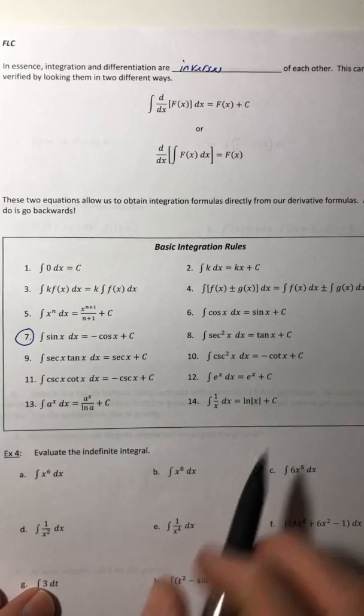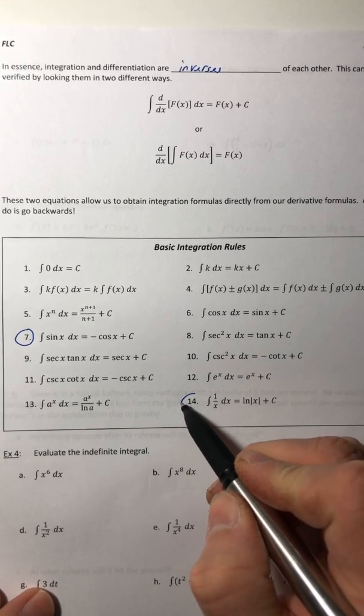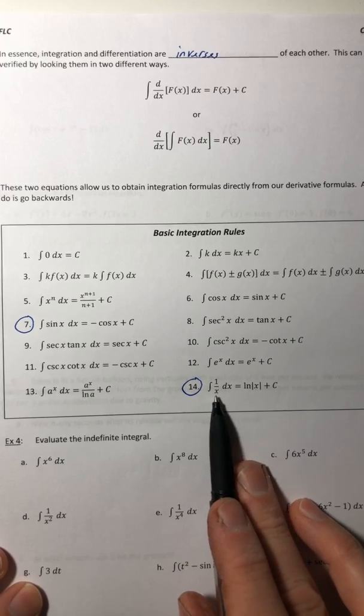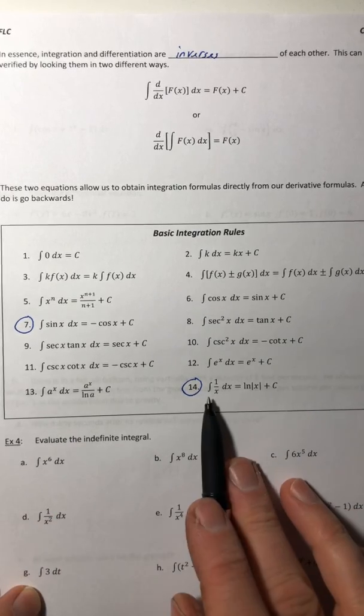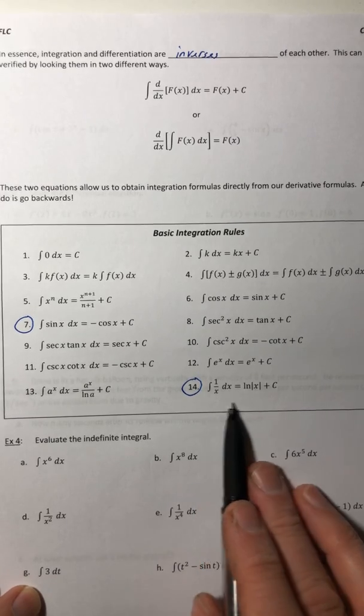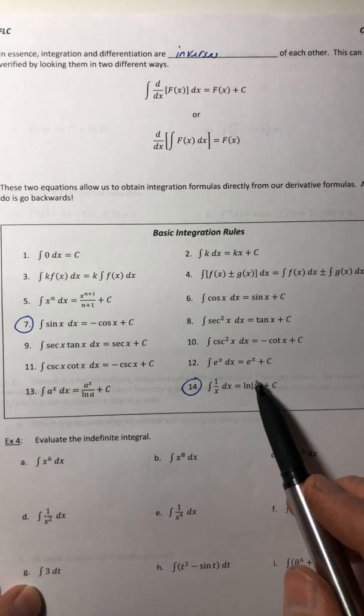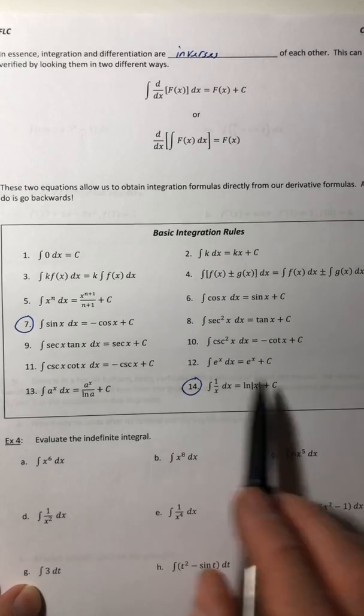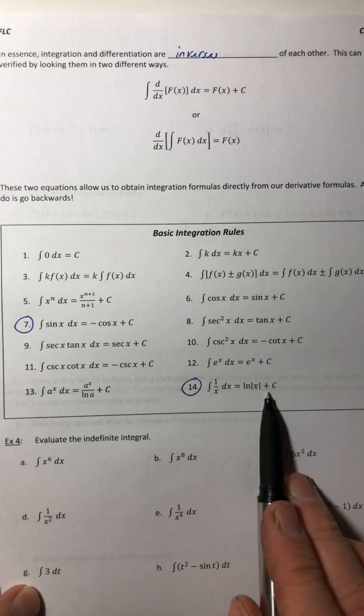And then the other one that seems to trip people up is number 14. This little guy right here. And the thing that messes that up is they want to do a derivative of this instead of integrating it into ln of the absolute value of x. And the other thing that trips them up is they want to leave off the absolute value bars.